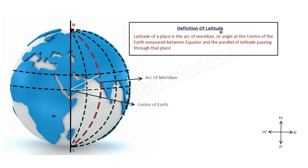Now coming to definition of latitude. We have studied parallel of latitude, equator, and prime meridian. Definition of latitude says that latitude of a place is the arc of meridian or angle at the center of Earth measured between equator and parallel of latitude passing through that place.